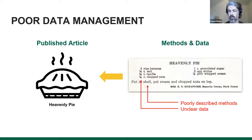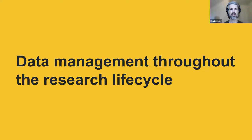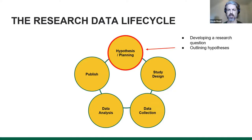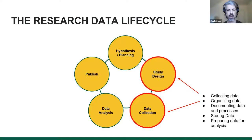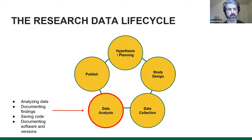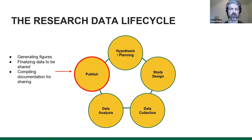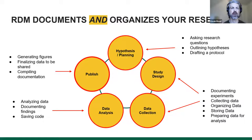From a data management perspective, we have poorly described methods and unclear data. Even though a publication might have a detailed methods section, you're still not getting the whole picture of that process. That's what data management is trying to accomplish. At the hypothesis and planning stage, we're developing a question, outlining a hypothesis, designing our study, drafting a protocol. We then collect the data, organize it, document it, and store it. Then we prep data for analysis, use software, create code, generate figures, and publish. Documentation and RDM keep track of all of that so when you publish, all this other information is clear and transparent.